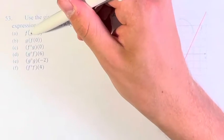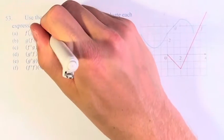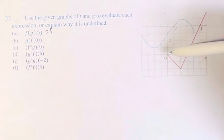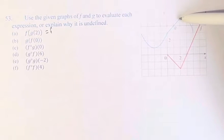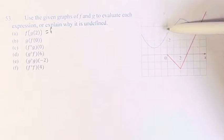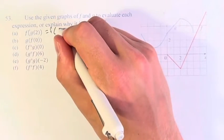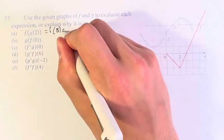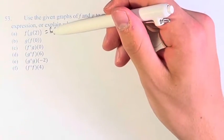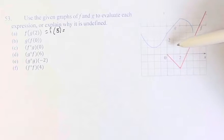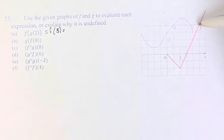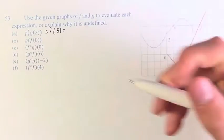First we have f of g of 2. So what is g of 2? We go to x equals 2 on the graph and find the value of g up there. The y value is 5. So f of g of 2 becomes f of 5. Going to the x value of 5 on the graph of f, that point has a y value of 4. So f of g of 2 equals 4.